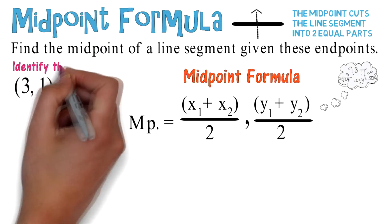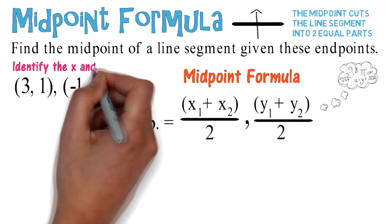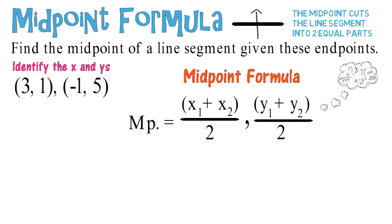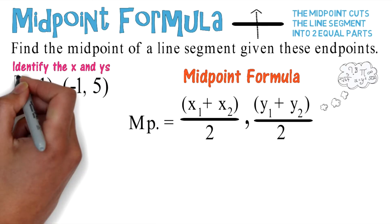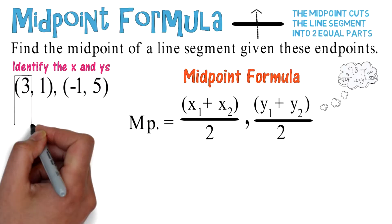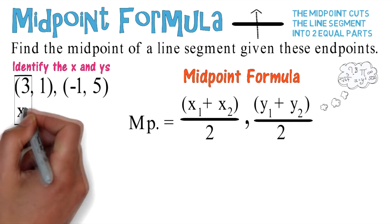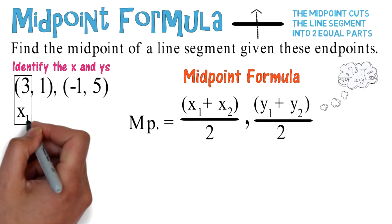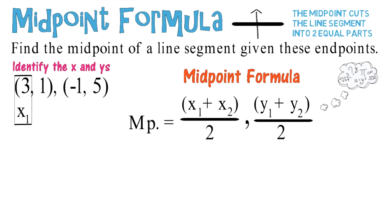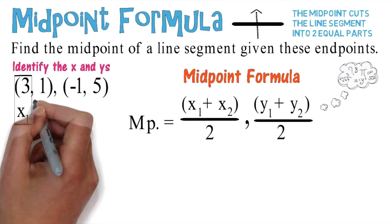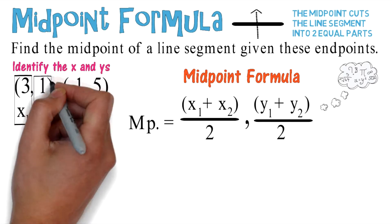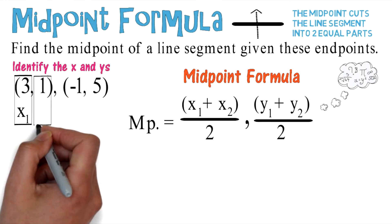The first step is to identify the x and y values. We'll begin with 3 — that's going to be your x1. Remember, x comes before y in the alphabet when naming the coordinates.